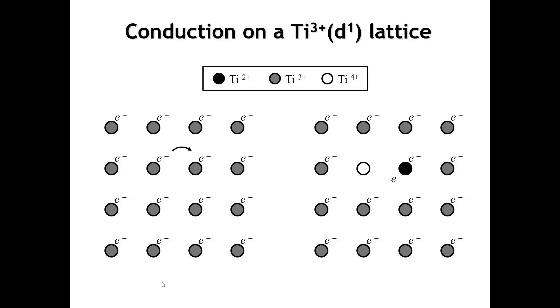When it does that, the ion where the electron moves to gains another electron and becomes a titanium 2-plus ion, whereas the titanium ion that lost an electron becomes titanium 4-plus.